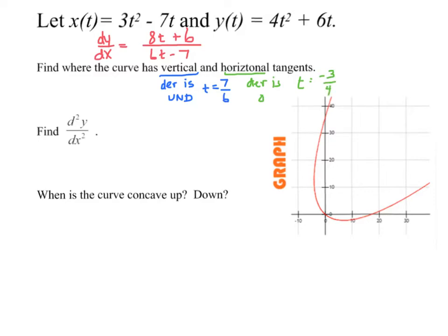I've gone back in my calculator and plugged in negative 3/4 to find the actual x and y coordinates. When I plug it in, I get 6.938 for the x-coordinate and negative 2.25 for the y-coordinate. If you look at the graph and go over 6.9 or almost 7 and down 2, you can see that this is the horizontal tangent.